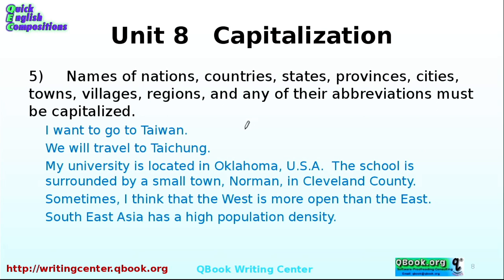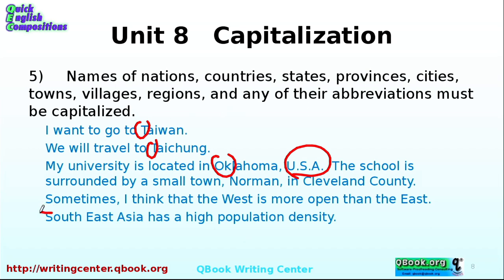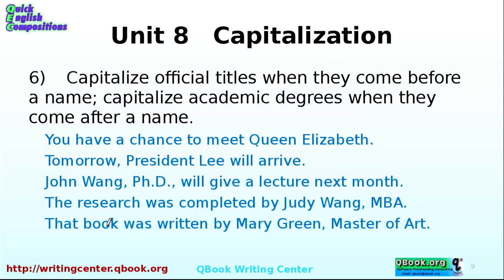Of course, places like countries and cities are capitalized — Taiwan, Taichung, Taipei, Shanghai. 'My university is located in Oklahoma' — that's a state. USA is a country. These are pretty straightforward. How about something like 'Southeast Asia'? That's a region, and we capitalize it because it's the name of an area.